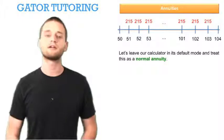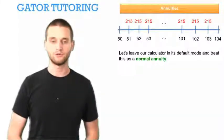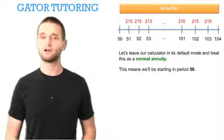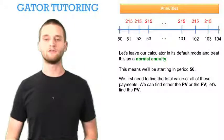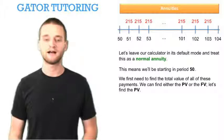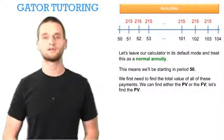Let's just leave our calculator in its default mode and treat this as a normal annuity. This means we'll be starting in period 50. We first need to find the total value of all of these payments. We can find either the present value or the future value. Let's find the present value.